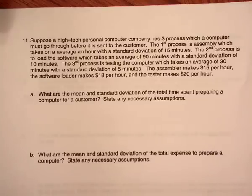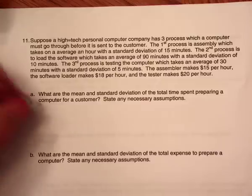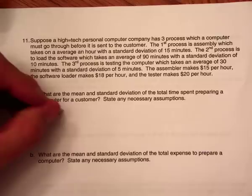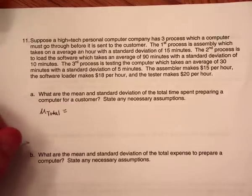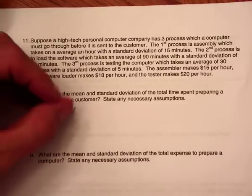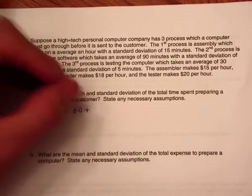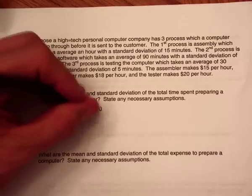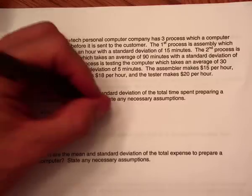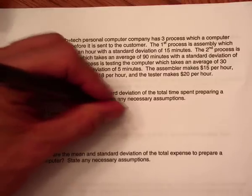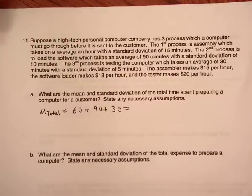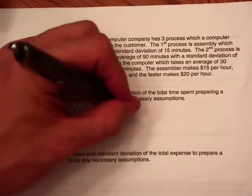Part A: what are the mean and standard deviation for the total time? The total time is one hour (converted to 60 minutes), plus 90 minutes for software, plus 30 minutes for testing. So the average total time is 180 minutes.